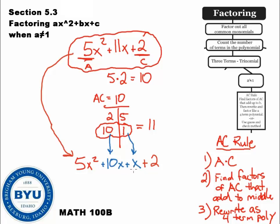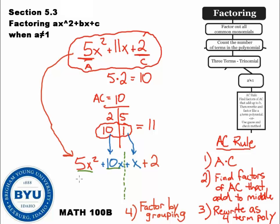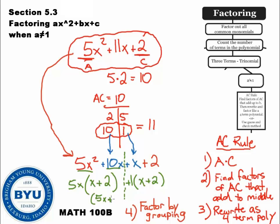Step number 4 is to factor by grouping. Now that we have a four-term polynomial, we chop the problem in half. On the left side, we can take out a 5x, leaving us with (x+2). On the right side, there's nothing to take out, so we just have 1·(x+2). There's an implied 1 out front. So our final answer is (5x+1)(x+2).